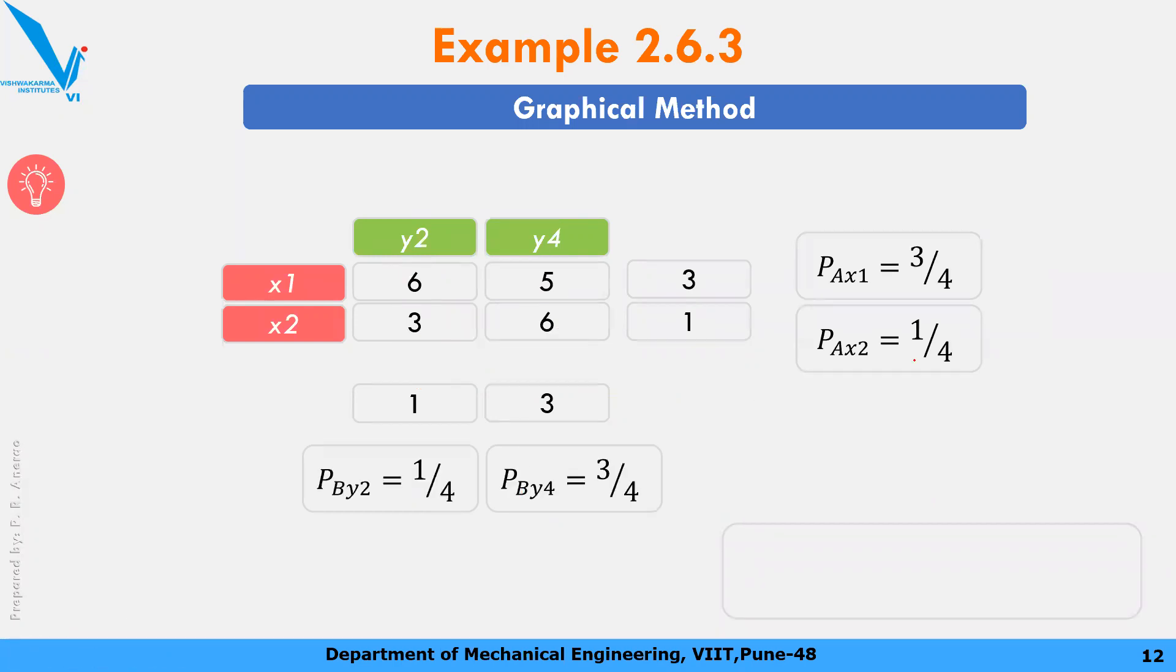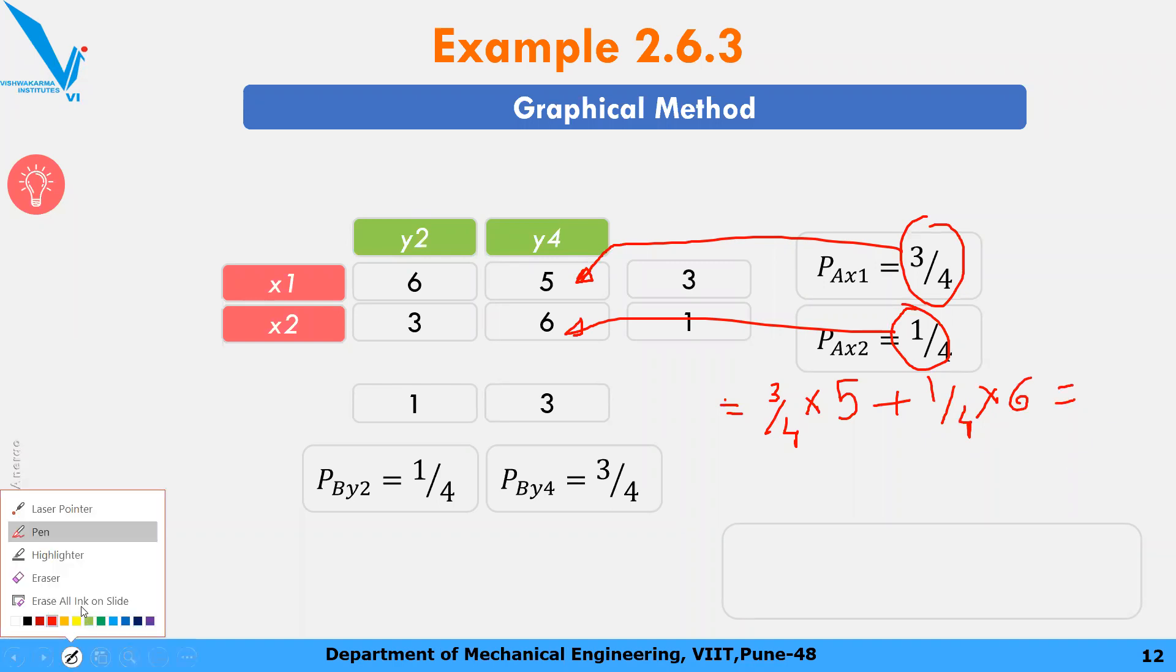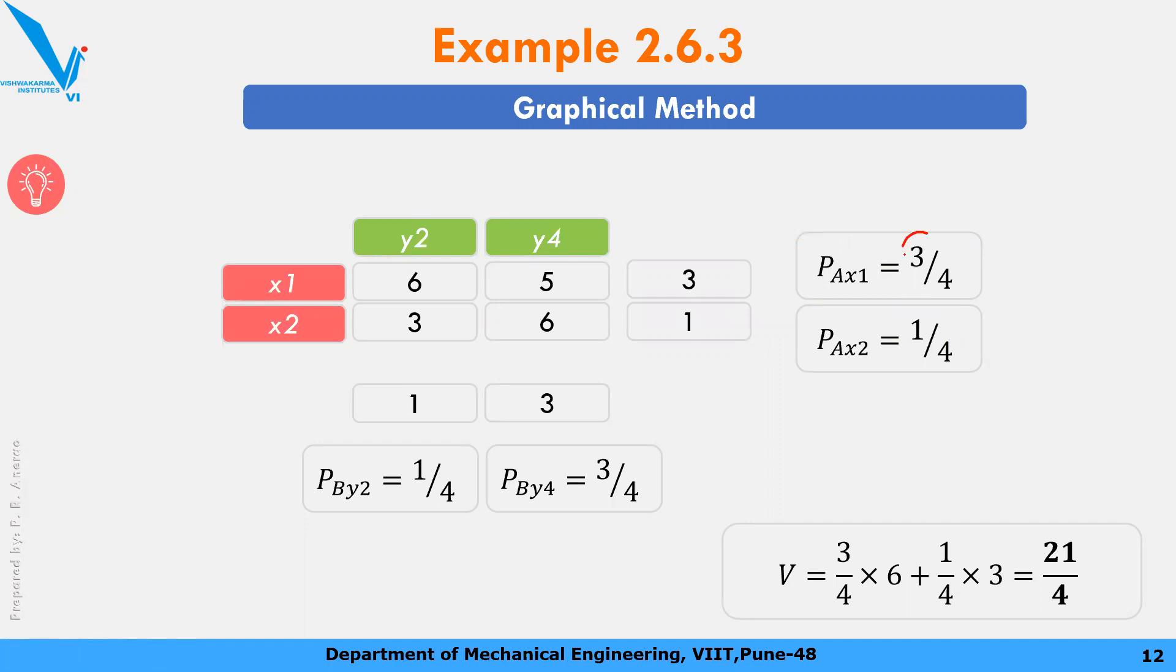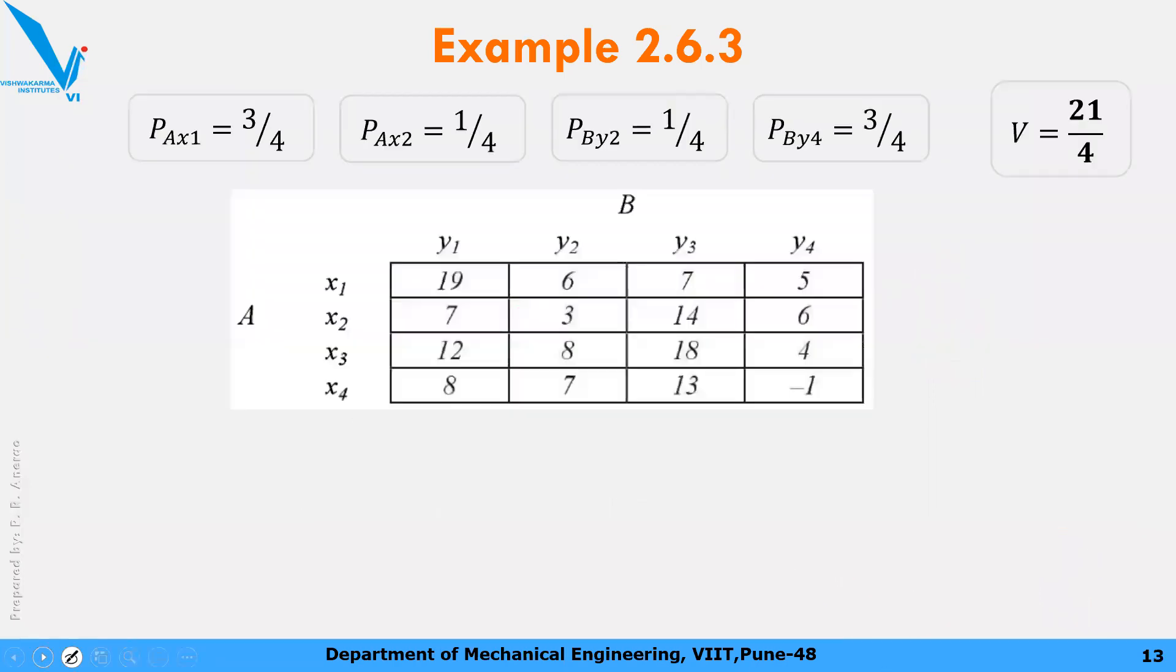Then we will calculate value of game. Now I think all of you can solve this. Value of game, just multiply this probability with any one value. I will multiply this. Value of game equal to 3 by 4 into 5 plus 1 by 4 into 6. You will get value of the game. Or you can use another method: 3 by 4 into 6 plus 1 by 4 into 3. So the value of the game arrives at 21 by 4. So this is your solution. You can clearly mention the final answer.